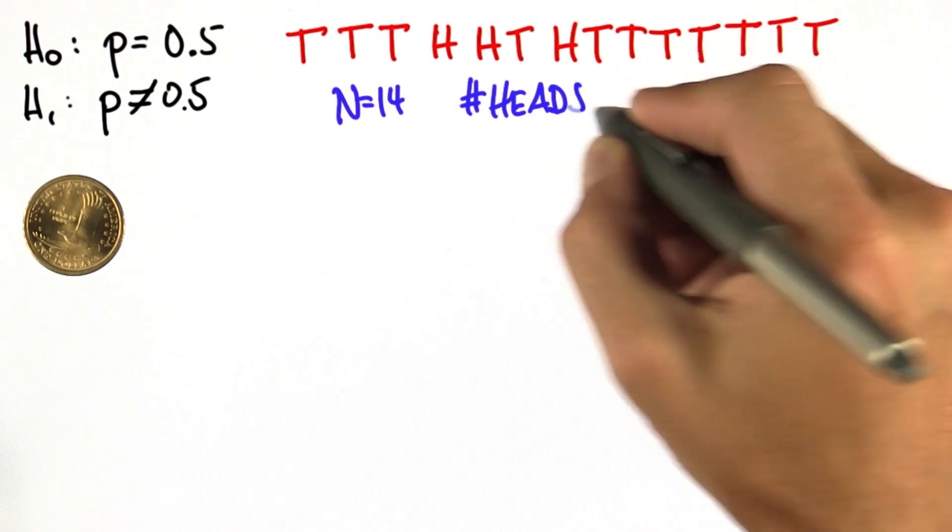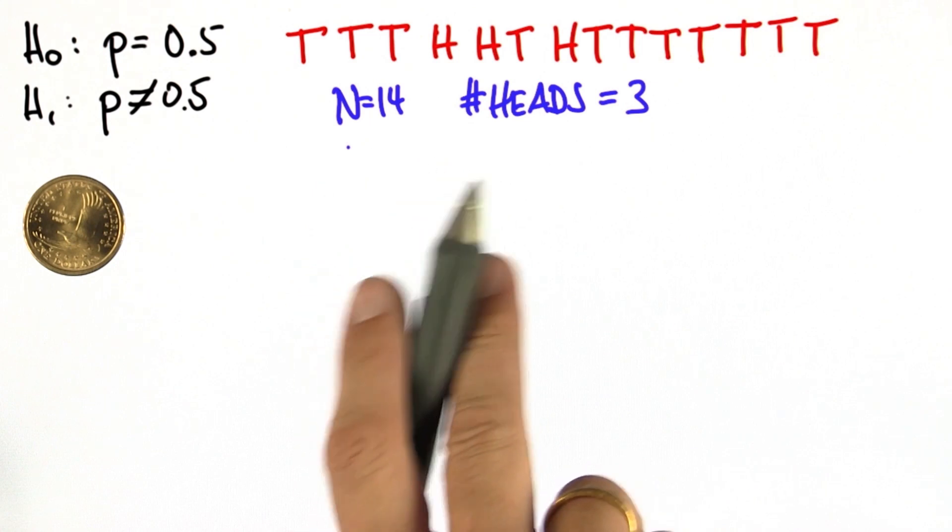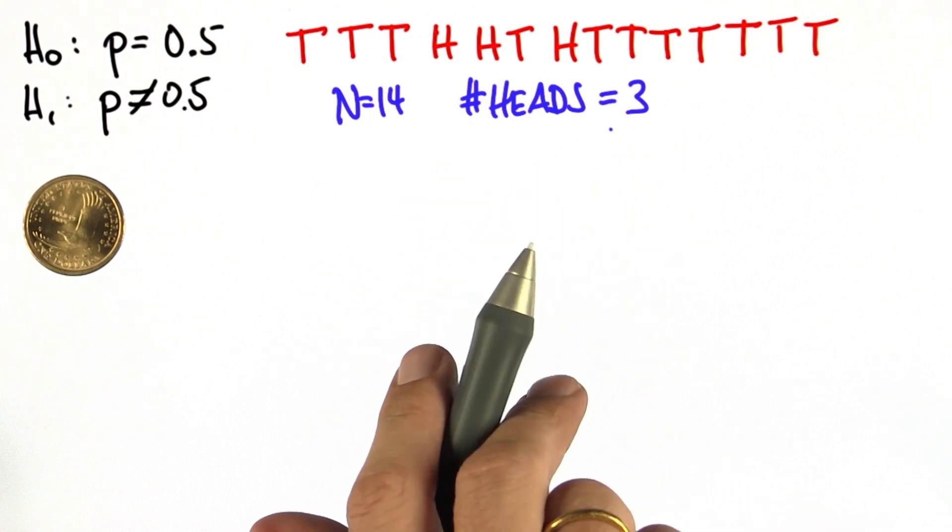So let's flip the coin. In 14 experiments, heads comes up exactly three times, and 11 times it comes up tails.